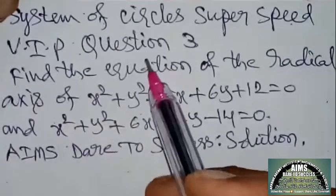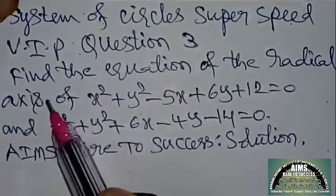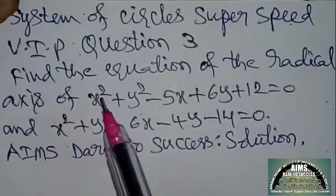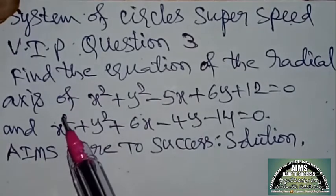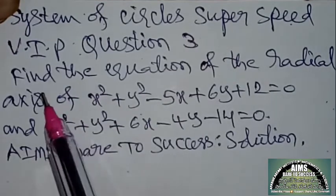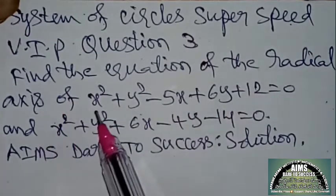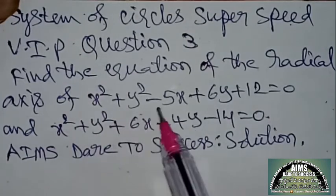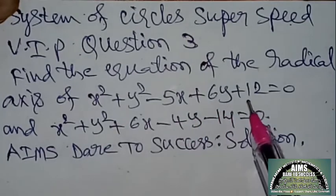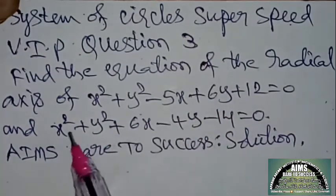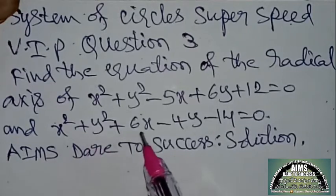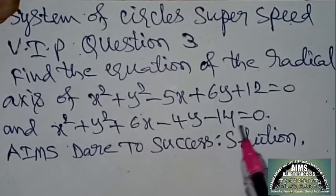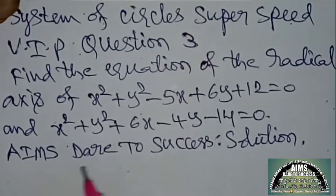VIP question is very important previous question. Today, our demanding question from the students — an interesting question. Find the equation of the radical axis of x² + y² − 5x + 6y + 12 = 0 and x² + y² + 6x − 4y − 14 = 0.